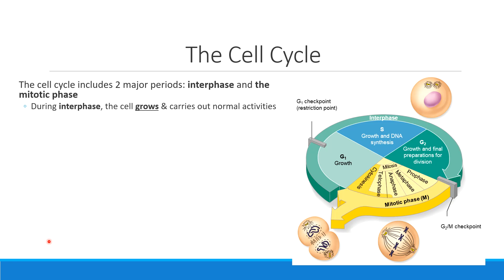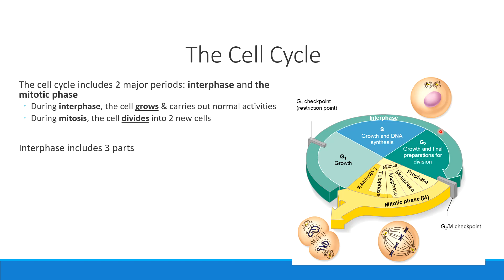Interphase is much longer, and interphase is when a cell is going to be growing, doing its normal jobs, and all of those kinds of things. The mitotic phase is when we do mitosis, or when a cell is going to go from being one cell into two cells. Interphase, as we can see from the pie chart, is at least three quarters of a typical cell's lifespan, and it actually has three separate parts occurring during this process.